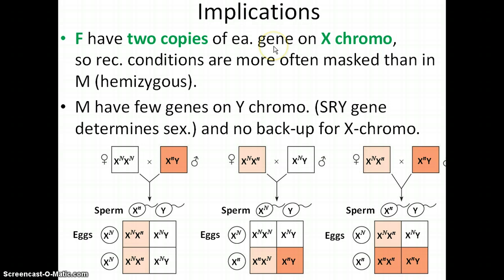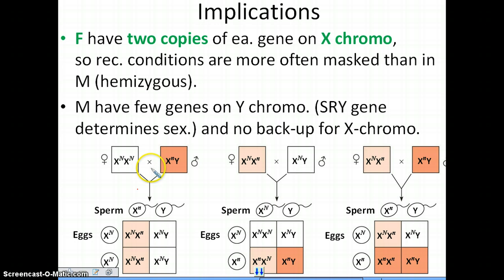Let's think about the implications of the different number of sex chromosomes found in males and females. Females have the ability to be homozygous or heterozygous for X-linked conditions, whereas males, being hemizygous, either have the trait or condition or do not. Looking at the practical implications: in the instance of hemophilia, since it is X-linked and recessive, the gene will be found on the X chromosome, and males possessing the recessive allele are going to have the condition.